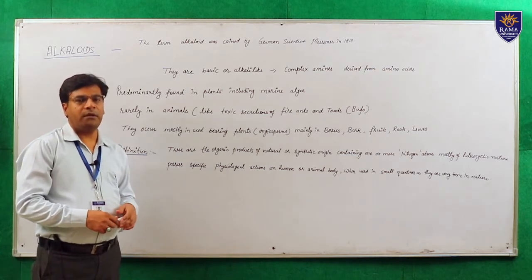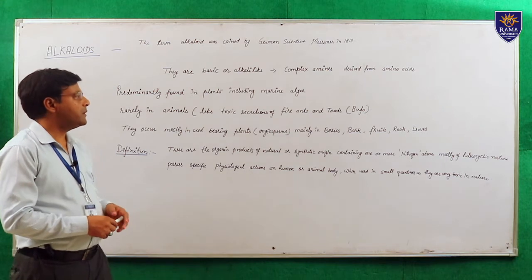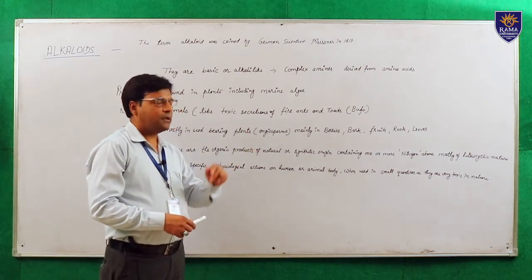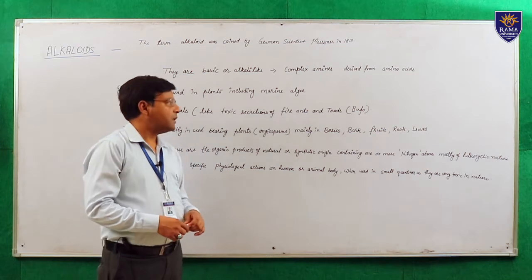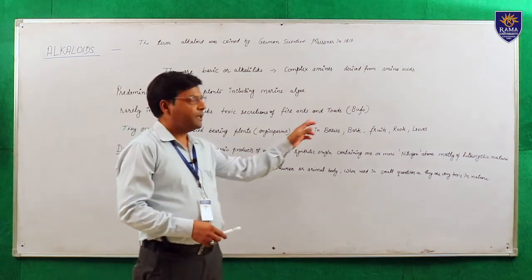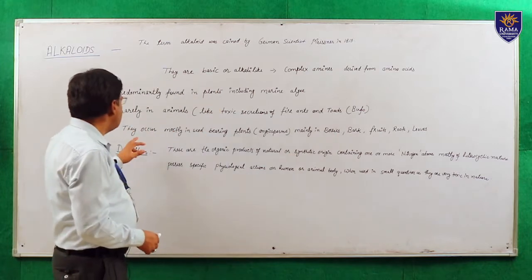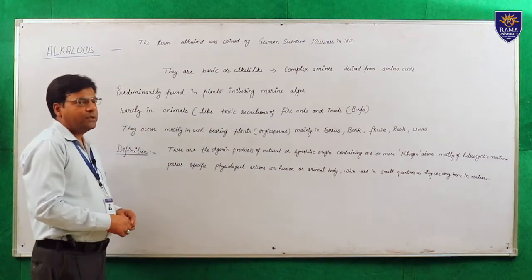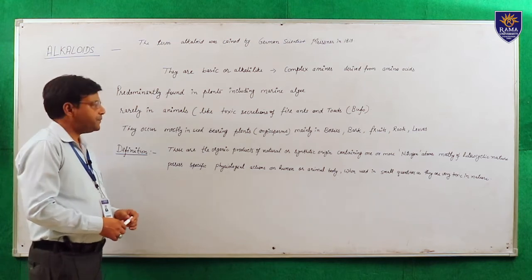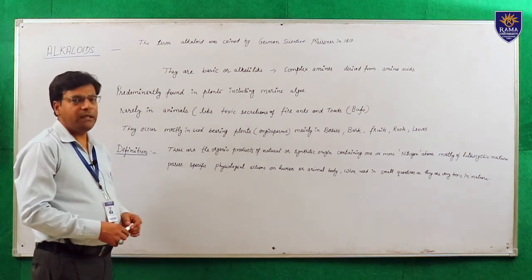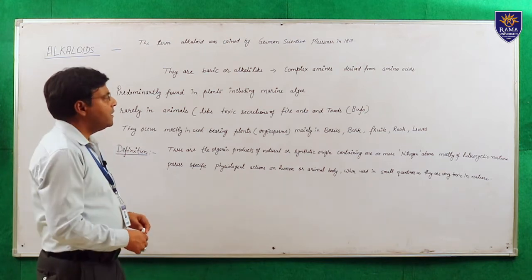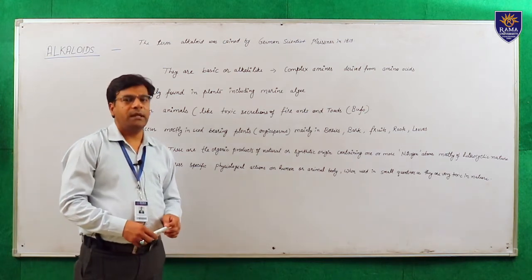You may know the zoological name of the toad is Bufo melanostictus. The skin of toad contains alkaloids. They occur mostly in seed-bearing plants which are called angiosperms, mainly in berries, barks, fruits, roots and leaves.